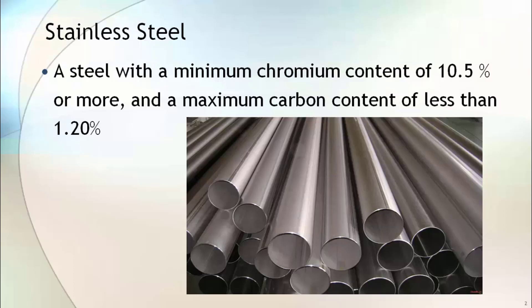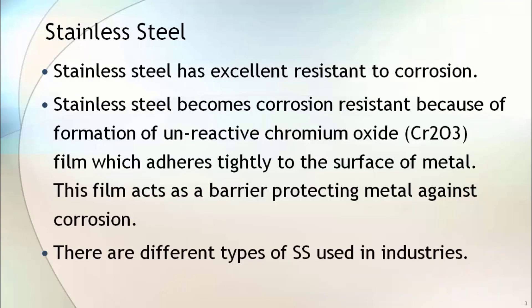Stainless steel is a steel with a minimum chromium content of 10.5% and a maximum carbon content of less than 1.2%. Stainless steel has excellent corrosion resistance and good ductility property. It becomes corrosion resistant due to the formation of a non-reactive chromium oxide film that adheres tightly to the surface of the metal, acting as a barrier and protecting the metal against corrosion.